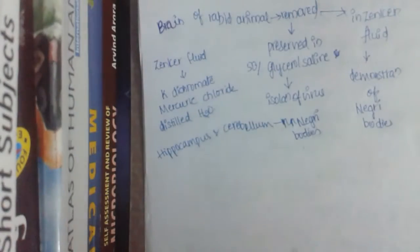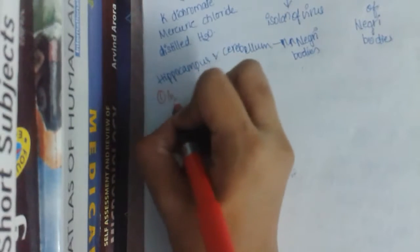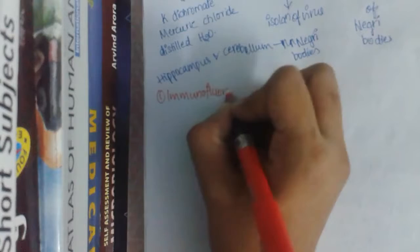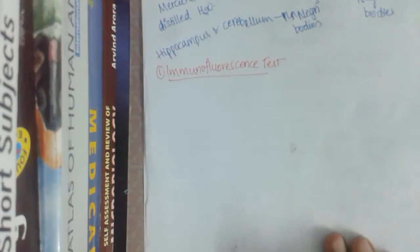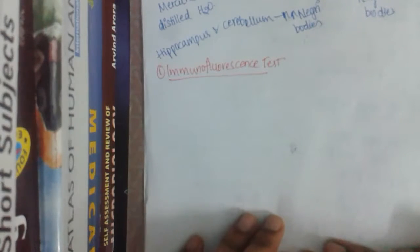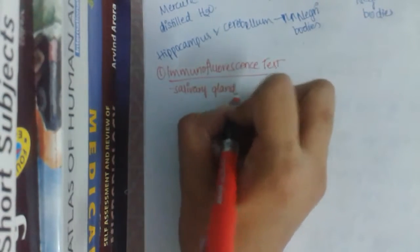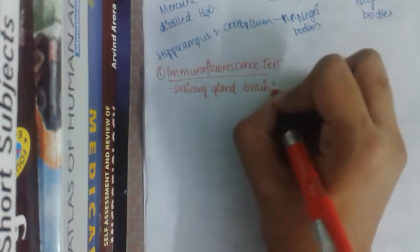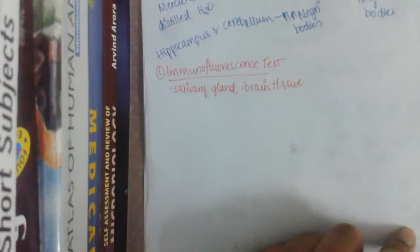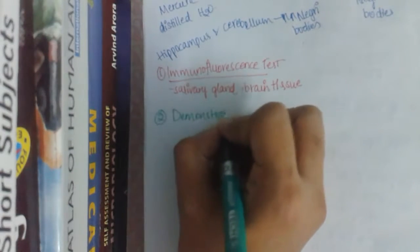The first test commonly done for demonstration of rabies virus is the immunofluorescence test. This is a rapid test done on brain tissue to demonstrate viral antigens. It is also done on the salivary gland, since the rabies virus is shed through the saliva. As this test was already discussed in the previous lecture, it will not be repeated here.